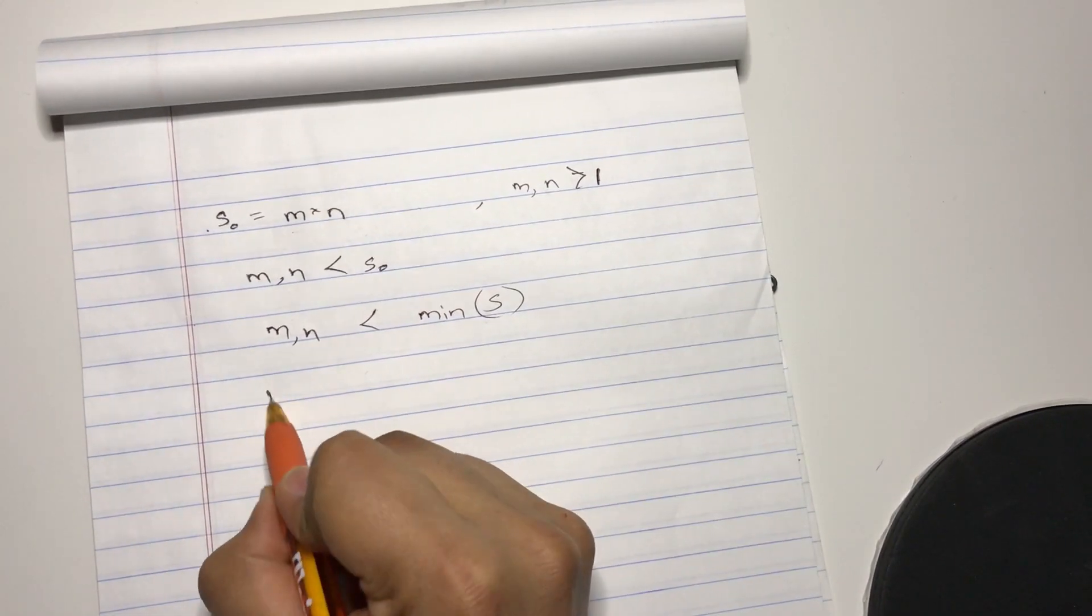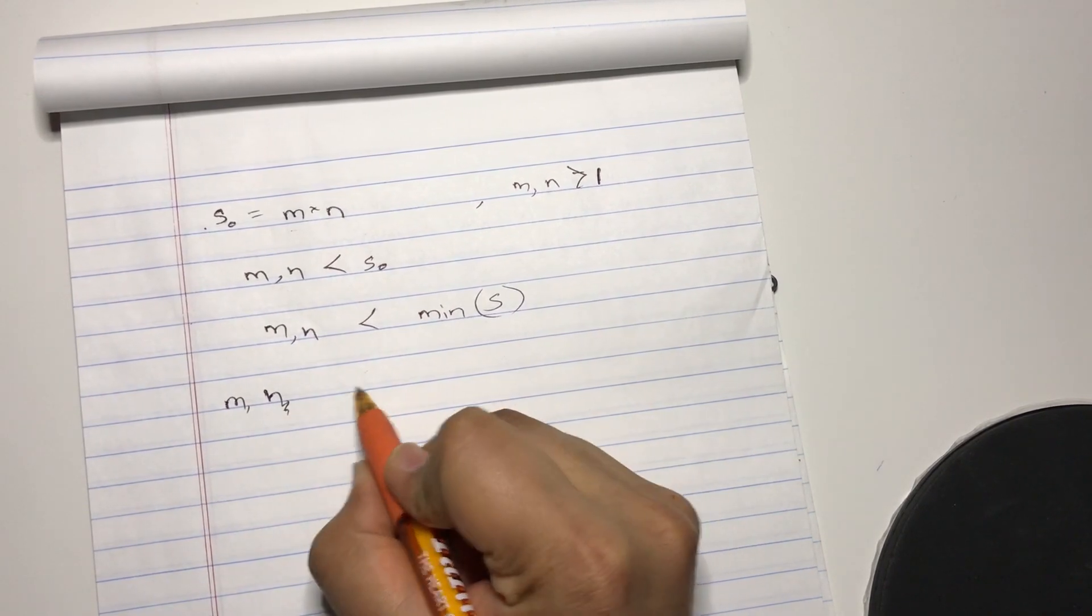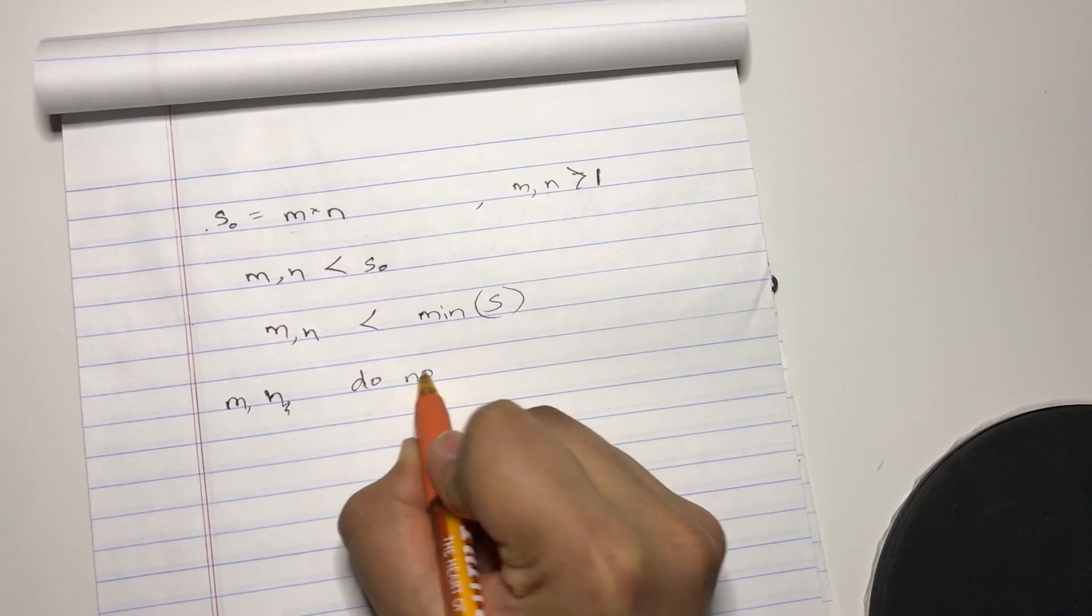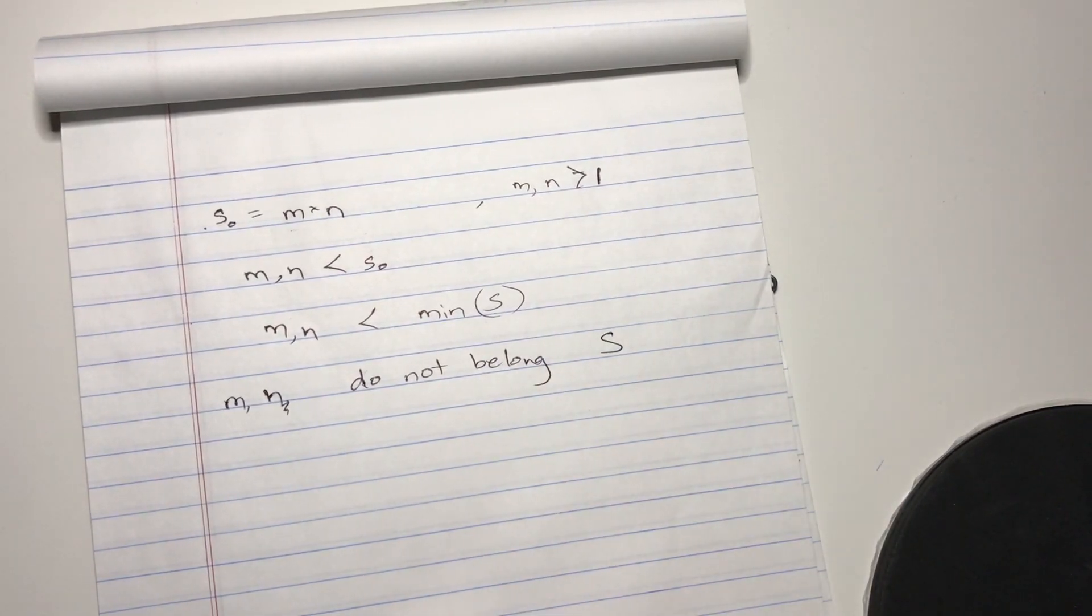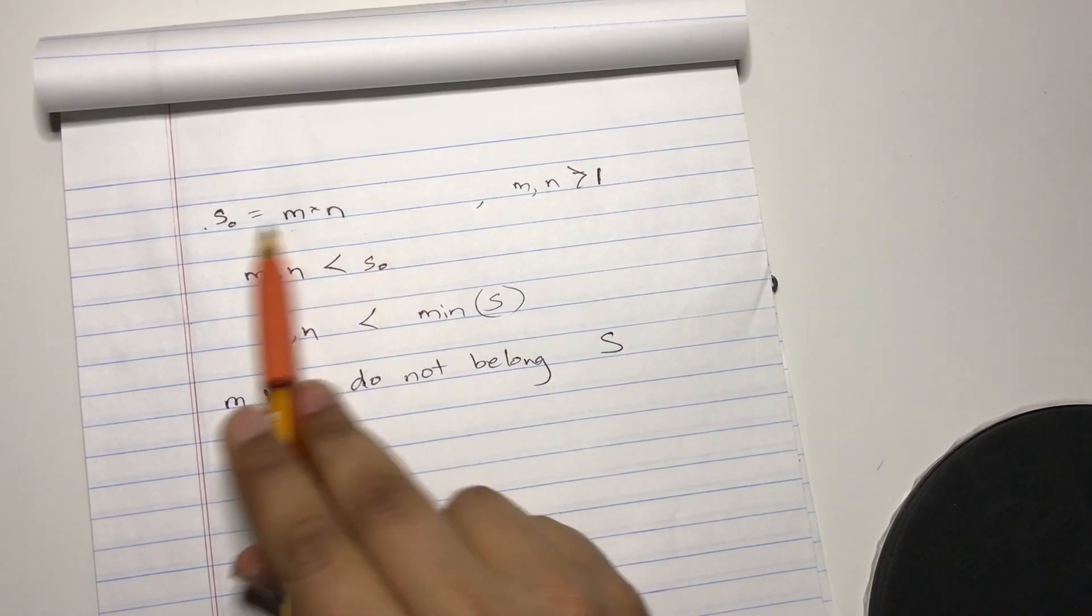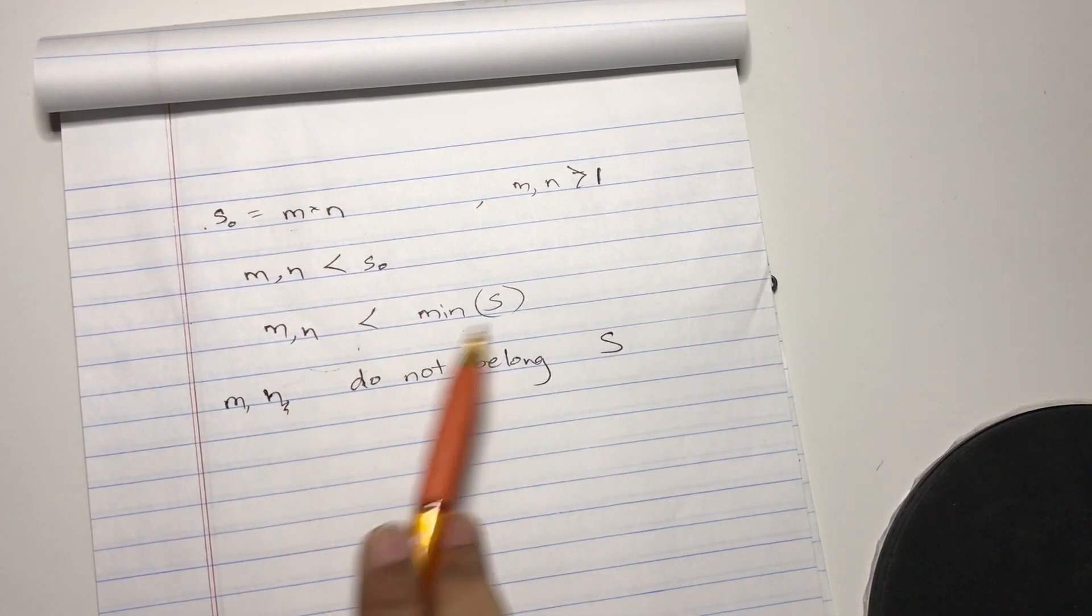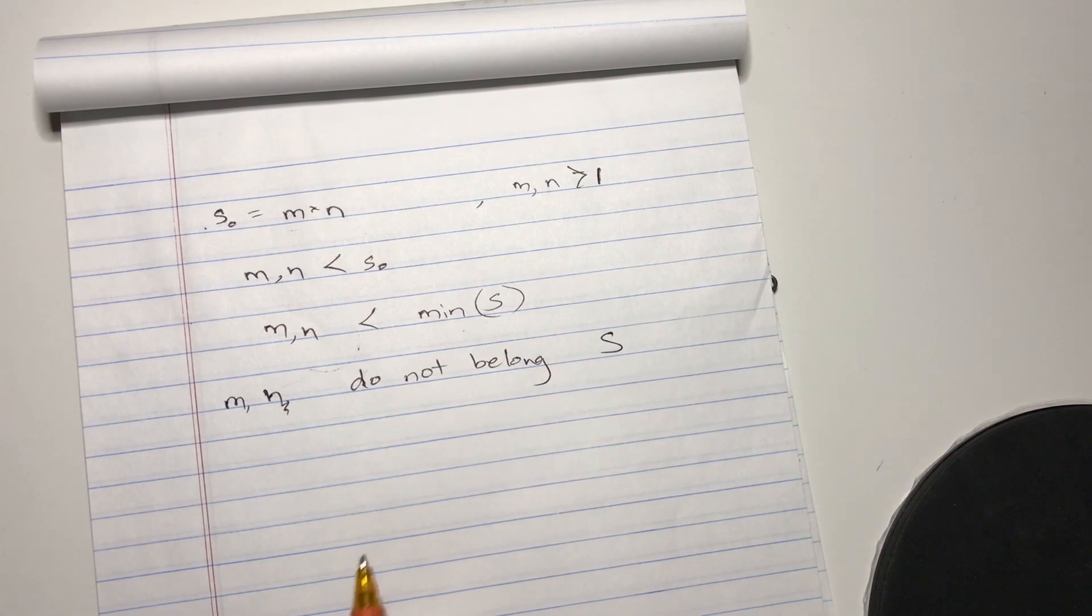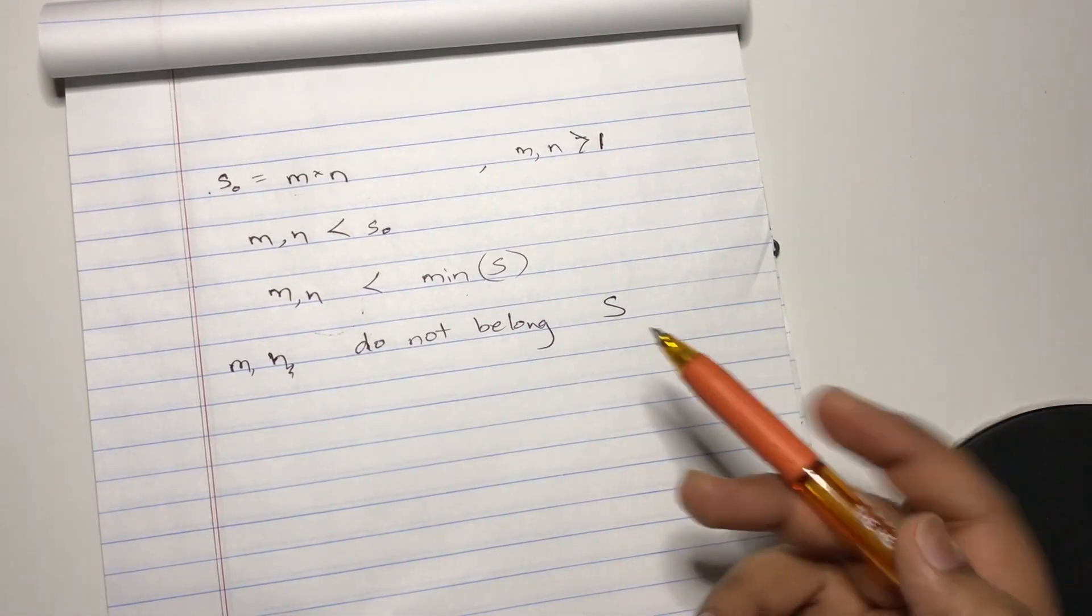So M and N are actually less than the minimum element of S, the set S. So M and N do not belong to the set S. Just a quick recap, because S_0 is the minimum element, and since M and N are less than the minimum element of the set S, they can't belong to the set S.